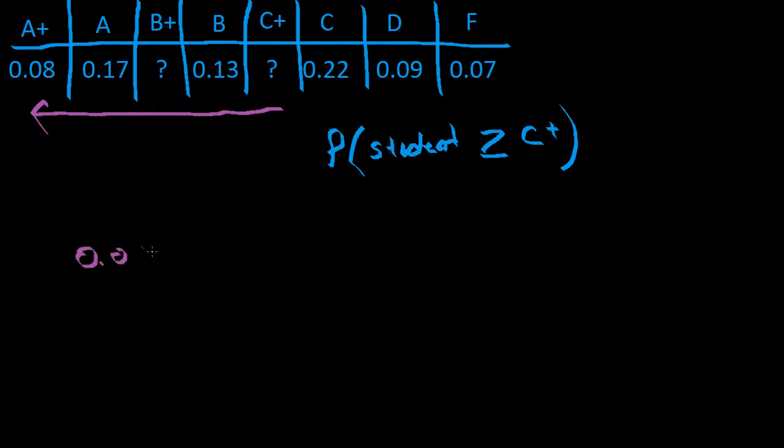Let's get started. It's going to be 0.08, add 0.17, add some value we don't know. So let's denote that as K. Let's use the variable or the letter K to represent the unknowns here.